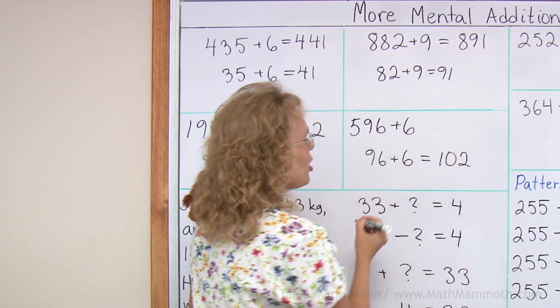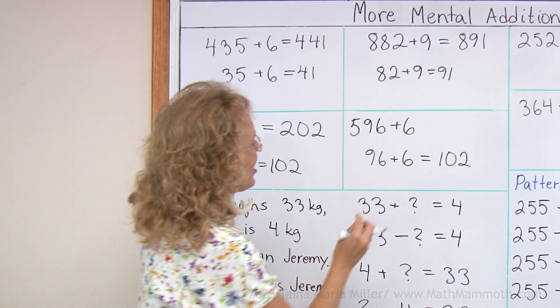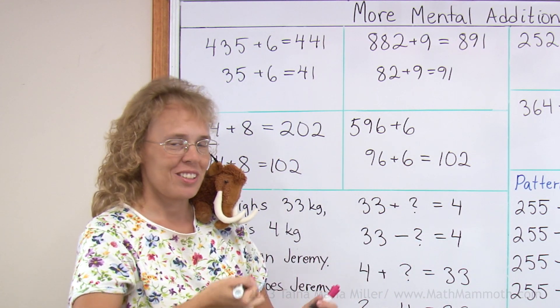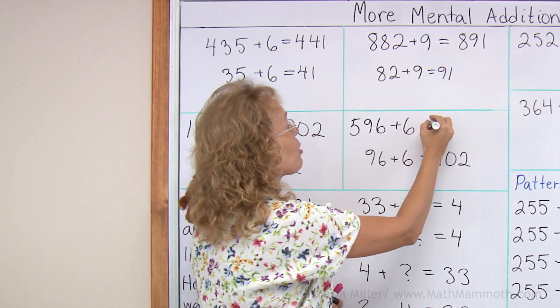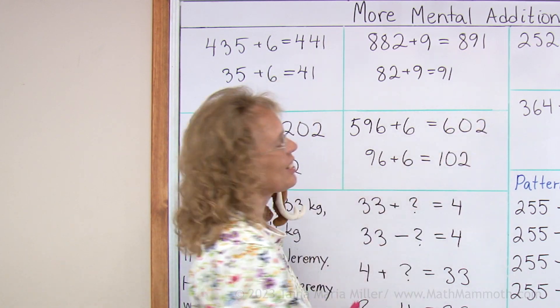Oops. I should have chosen different numbers, right? So again, we have the situation that it goes 2 over the 100. And this one also is going to be 2 over the next 100. 602.